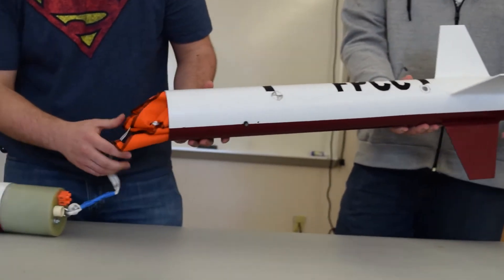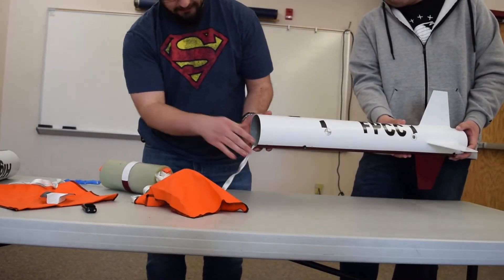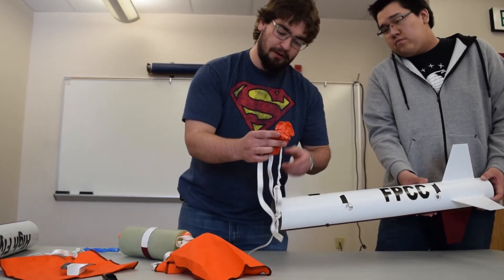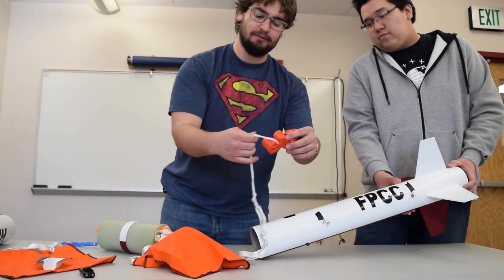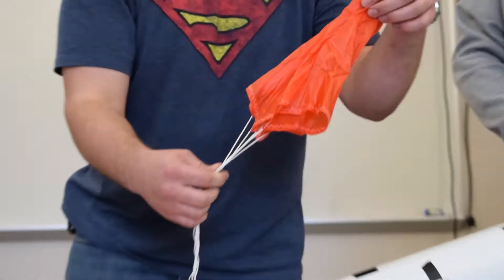And we'll go ahead and we'll do the parachute now. So we got some more protective wadding to protect it. Now this is the drogue chute. This is just a very small, I believe it's an 18 inch parachute, that should deploy first right at apogee.